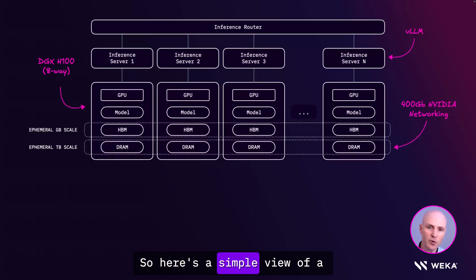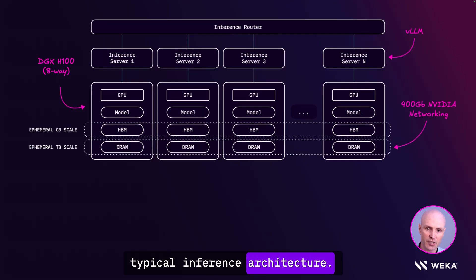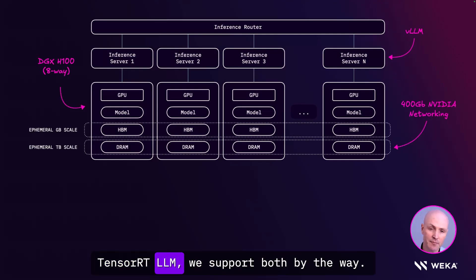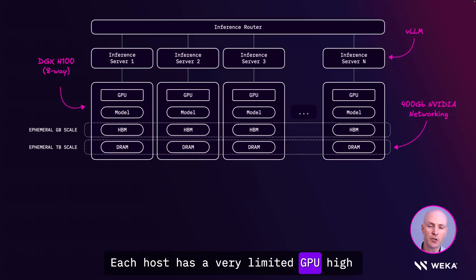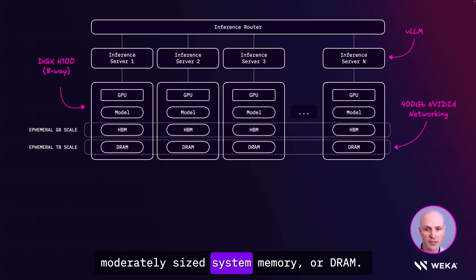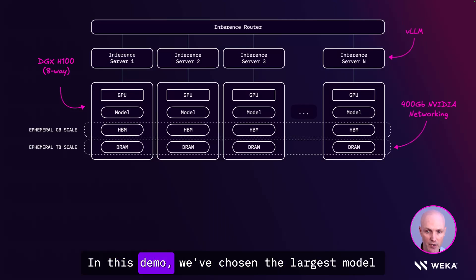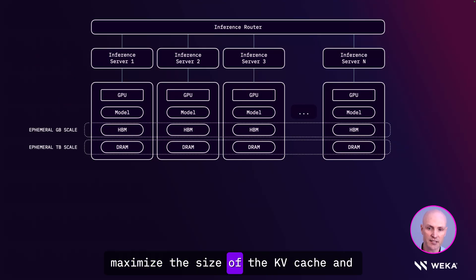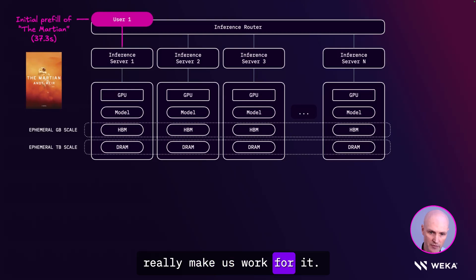Here's a simple view of a typical inference architecture. We have inference servers running on the GPU hosts themselves, such as VLLM or TensorRT-LLM — we support both, by the way. Each host has a very limited GPU high bandwidth memory, or HBM, and a more moderately sized system memory, or DRAM. In this demo, we've chosen the largest model we could fit on a single DGX H100 to maximize the size of the KV cache and really make us work for it.